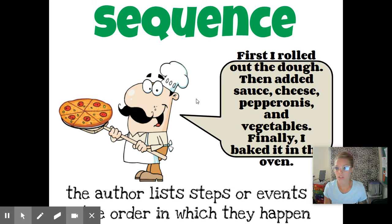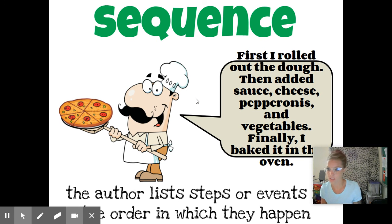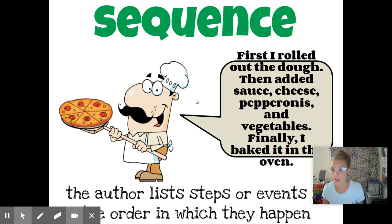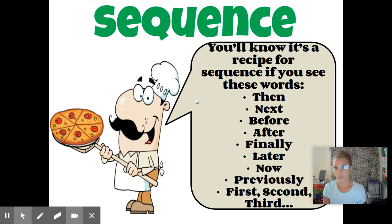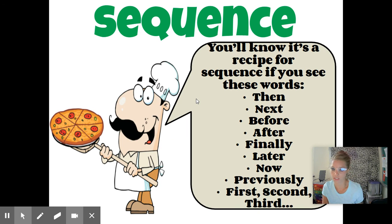This was probably the easiest to spot — sequence. Sequence is literally the order in which something happened. So: first I rolled up the dough, then I added sauce, cheese, pepperonis, and vegetables, and finally I baked the pizza in the oven. Literally just giving you from start to finish. You could probably see this in history by looking at dates. Look for words like 'then,' 'next,' 'before,' 'after,' 'finally,' 'later,' 'previously,' and obviously 'first,' 'second,' 'third,' 'fourth,' etc.